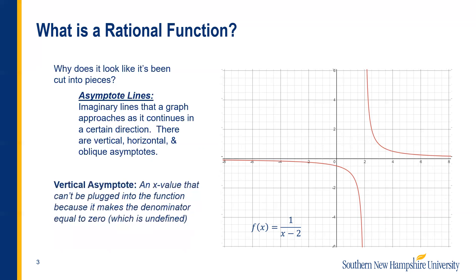So what's a vertical asymptote and how would we find one? It's the x value that can't be plugged into the function because it makes the denominator equal to zero. We plugged in the number 2 and it didn't work. So at x equals 2, we can draw this vertical line — this is our vertical asymptote. You can see it perfectly cuts this graph into two different pieces.